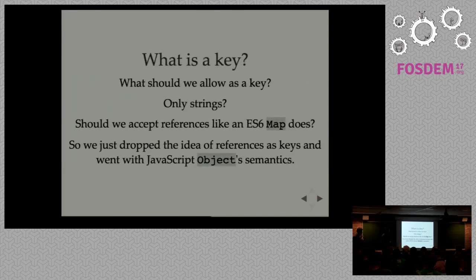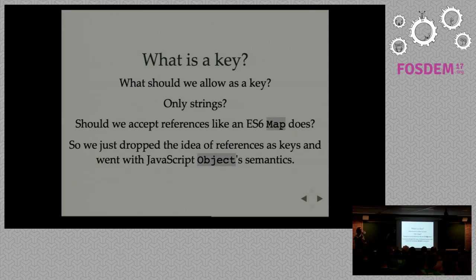What should a key be? In NetworkX you can have anything as a key — a reference, a string, etc. We chose the JavaScript way: only a string can be a key. If you pass an integer, it will be coerced and cast to a string like an object property would. This is more JavaScript-idiomatic and much easier to serialize, since serializing arbitrary objects is painful.